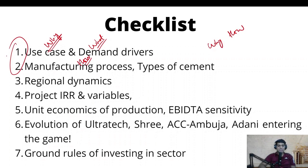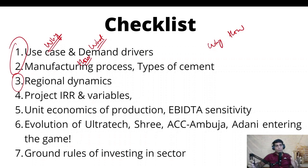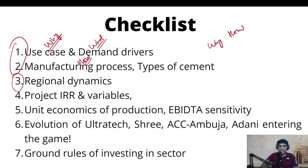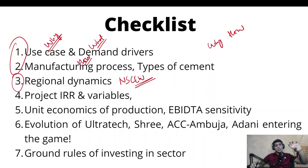The second part of our discussion is going to be the regional dynamics. Cement is a bulky material — it's a low value but very high volume product. Hence, manufacturing it in say Punjab in the north and consuming it in Kerala in the south is very unsustainable. So we divide India into five regions — north, south, central, east and west — and then we understand the demand and supply dynamics of each region to understand the overall impact.